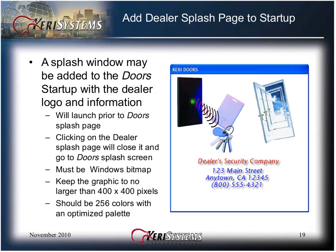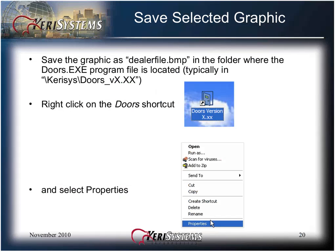Do not include the quotation marks, then click the Save button to save your dealer information text. You may also add a dealer splash page to the startup sequence. A splash window will show the dealer logo and information prior to the launching of the DOORS splash page. If you click on the dealer splash page, it will close and go to the DOORS splash screen. If using a company logo, it must be a Windows bitmap file. Keep the graphic no larger than 400 x 400 pixels and 256 colors with an optimized palette. Save the graphic as a dealer file .bmp in the folder where the DOORS.exe program file is located.